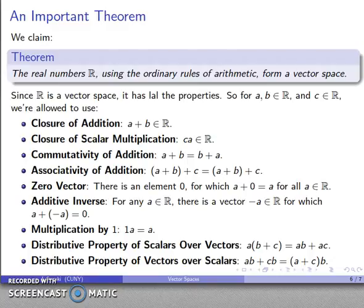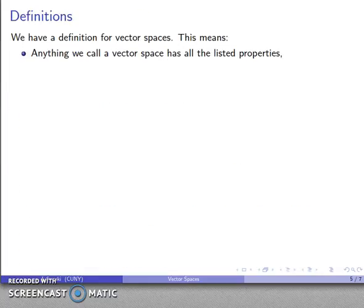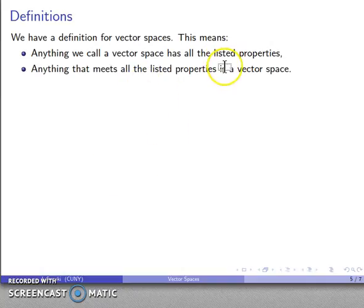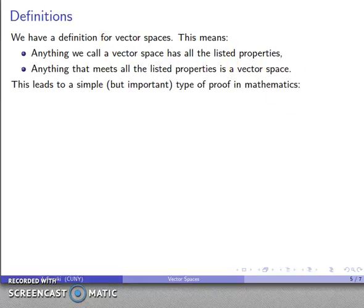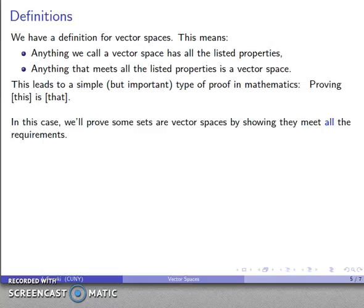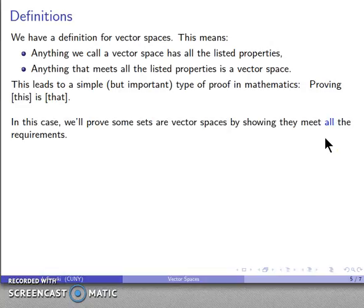This is why being able to determine whether something is a vector space is so important. Anything that meets all of the listed properties is a vector space — this is what makes it a proper definition. This leads to an important type of proof: proving that something is a vector space by showing it has all of the required properties. Importantly, we have to meet all of the requirements; if we fail even a single one, we do not get to call something a vector space. We'll take a look at that in the next video.